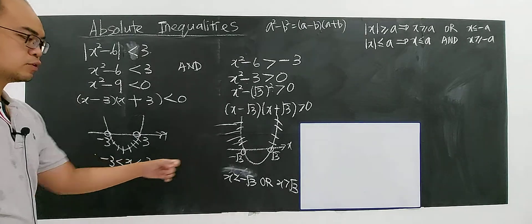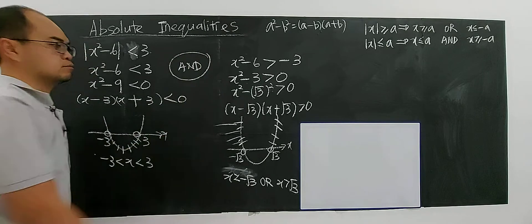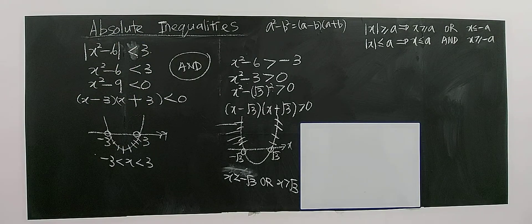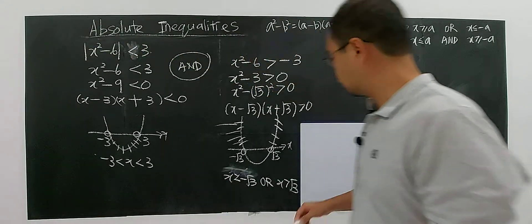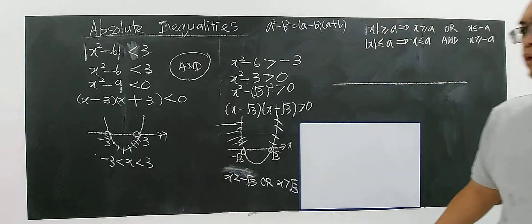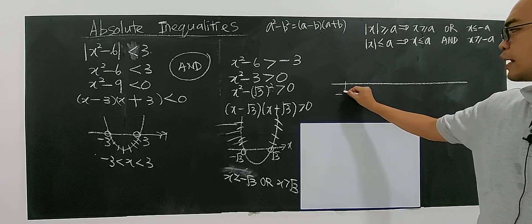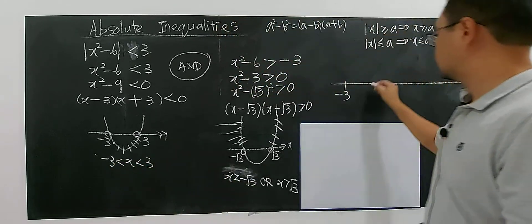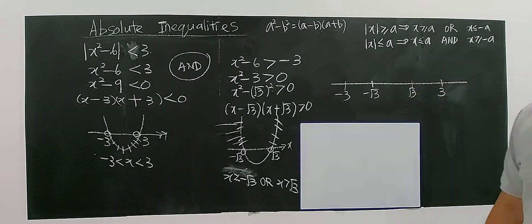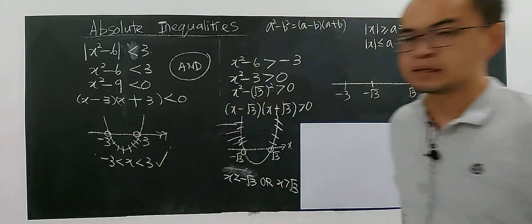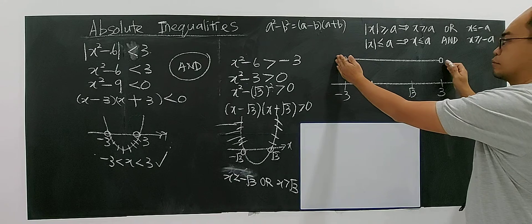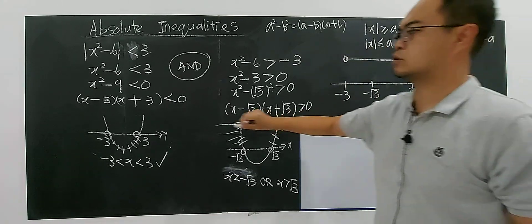But you have two different solution and you have to combine the solution by the operation and. What is and? And refer to intersection of the solution. So you can draw a number line to help you to find the region where these two solution intersect. So the smallest solution will be negative three, then you have a square root of three followed by three.